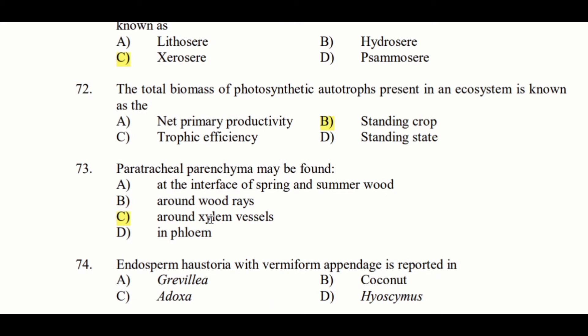Next question: Endosperm haustorium with a vermiform appendage is reported in — Option A: Grevillea, Option B: Coconut, Option C: Adoxa, Option D: Hyzymas. The answer is Option A: Grevillea — endosperm haustorium with vermiform appendage is present in Grevillea.